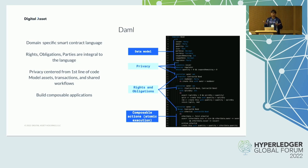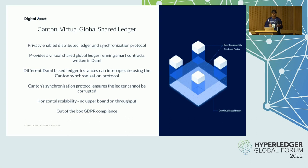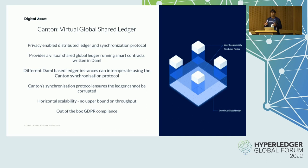Canton is a DAML ledger interoperability and synchronization protocol. Different DAML-based ledger instances can interoperate using the Canton synchronization protocol — they can be merged and transformed, never risking a fork or a lock, as they're always part of one virtual global ledger. Digital assets and workflows can flow freely between ledgers, and the Canton synchronization protocol ensures that the ledger is always in a valid state.